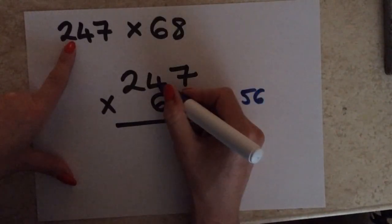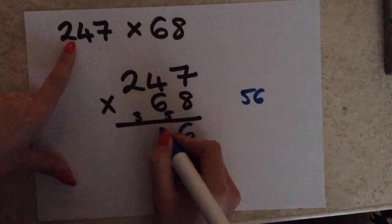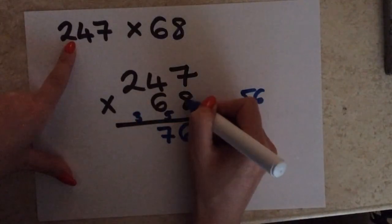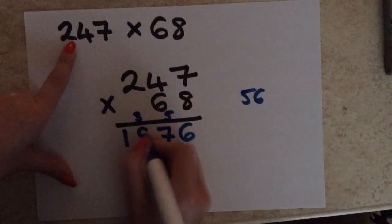And then 8 by the 4, which is 32. Add on the 5, that's 37. So, I'm going to carry the 3 over, and then write the 7 here. And then 8 times 2, which is 16, and add on the 3, which will give you 19.